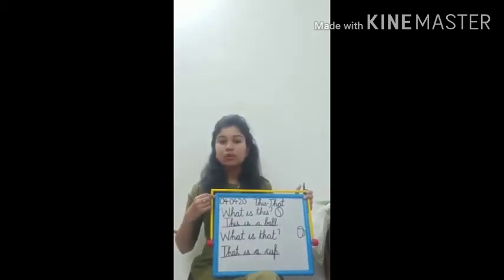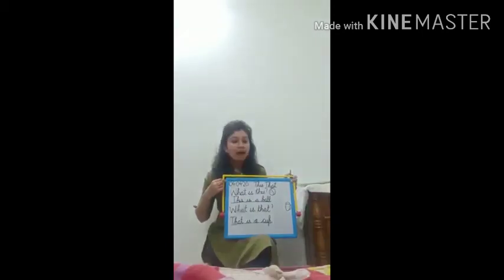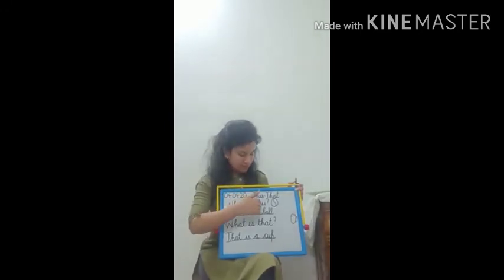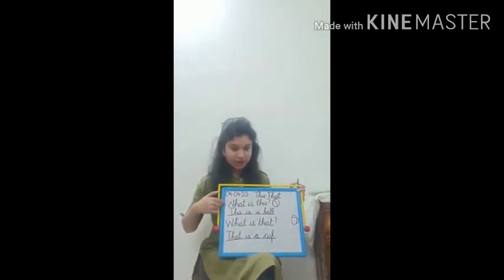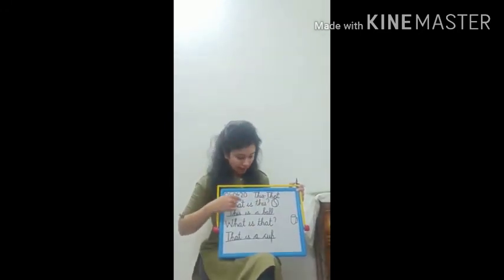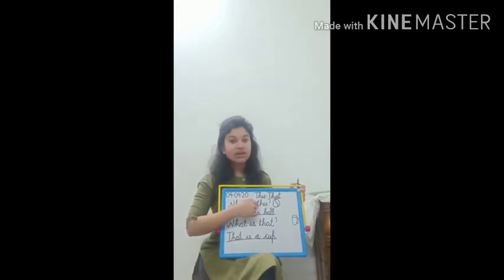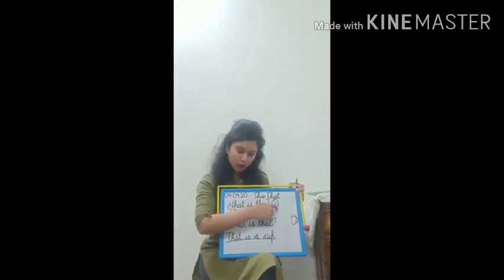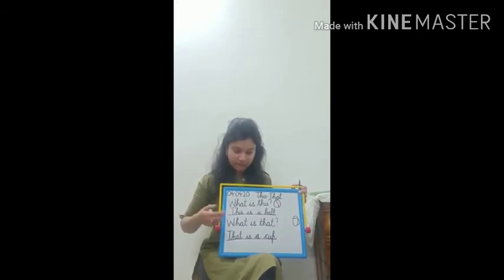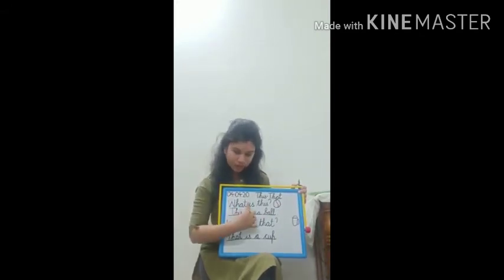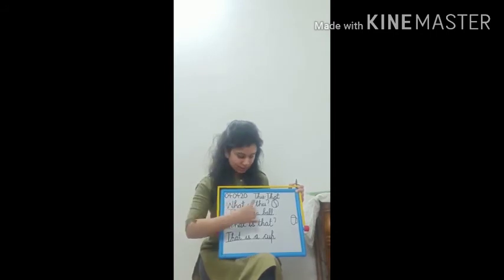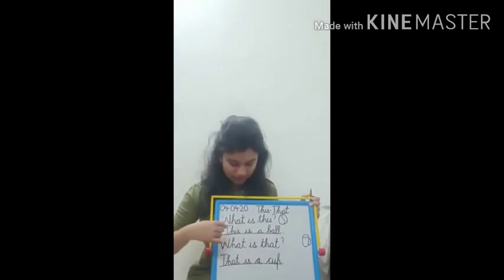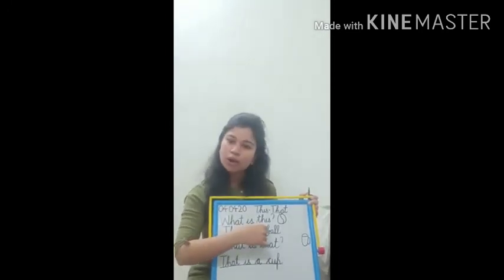Us ne aapse question put kiya — he asked you: 'What is this?' W-H-A-T: 'What'. I-S: 'Is'. T-H-I-S: 'This'. 'Ball.' Aapne answer kiya: T-H-I-S: 'This'. One finger gap. I-S: 'Is'. One finger gap. B-A-L-L: 'ball'. This is a ball.